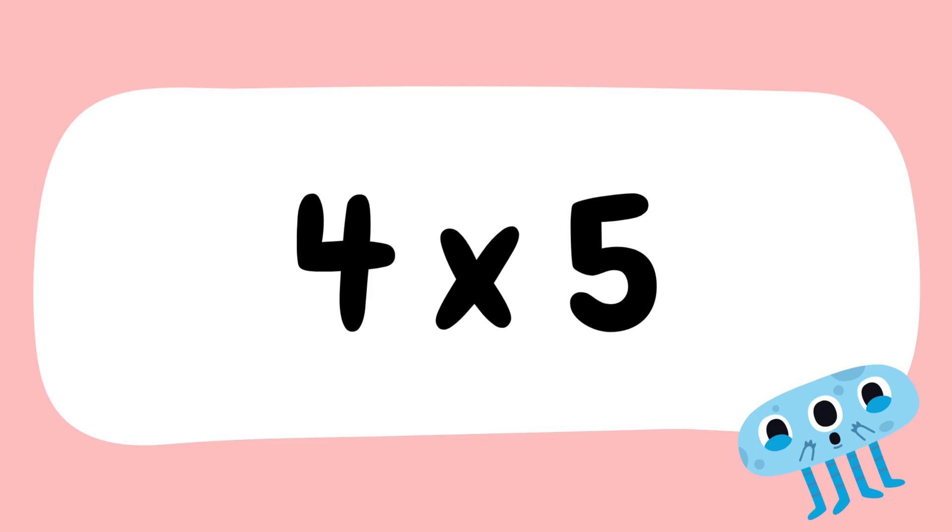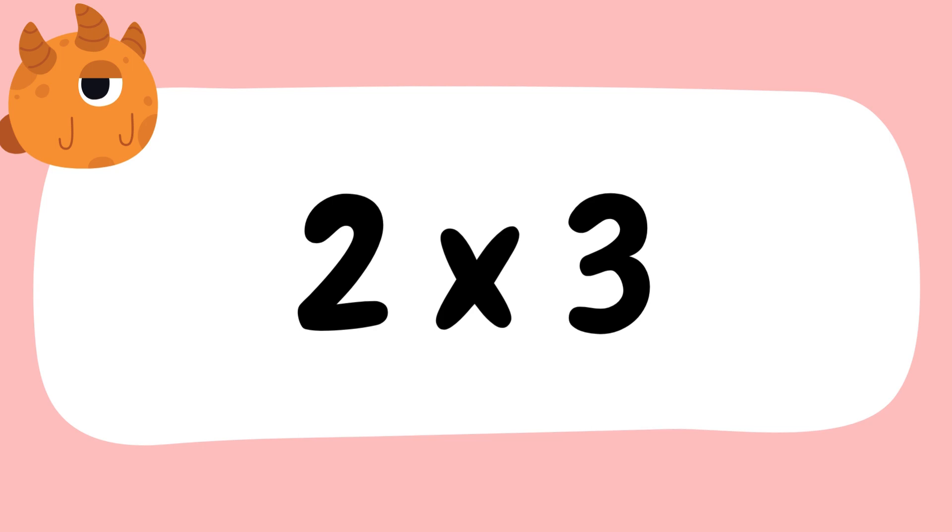Next is 2 multiply by 3. Tell me the answer. 2 multiply by 3 is equal to 6.